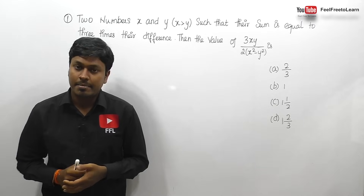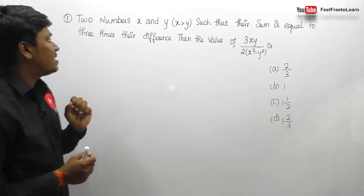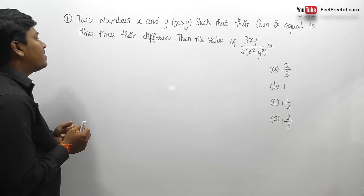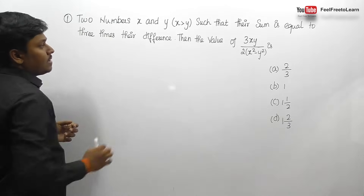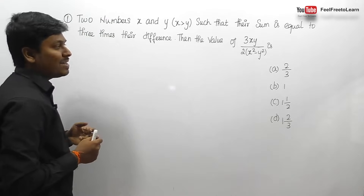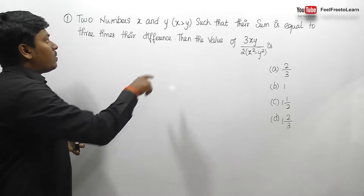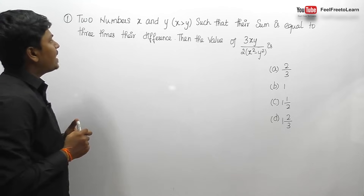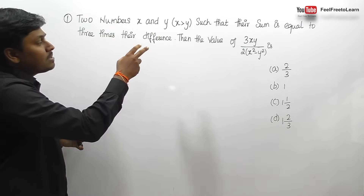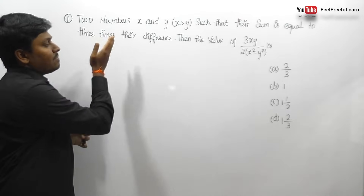Let me move on to set number one on the topic algebra. Question number one: two numbers x and y such that their sum equals three times their difference. The target is to find the value of 3xy divided by 2 into x squared minus y squared. Using the given condition, let me find the value of x and y.